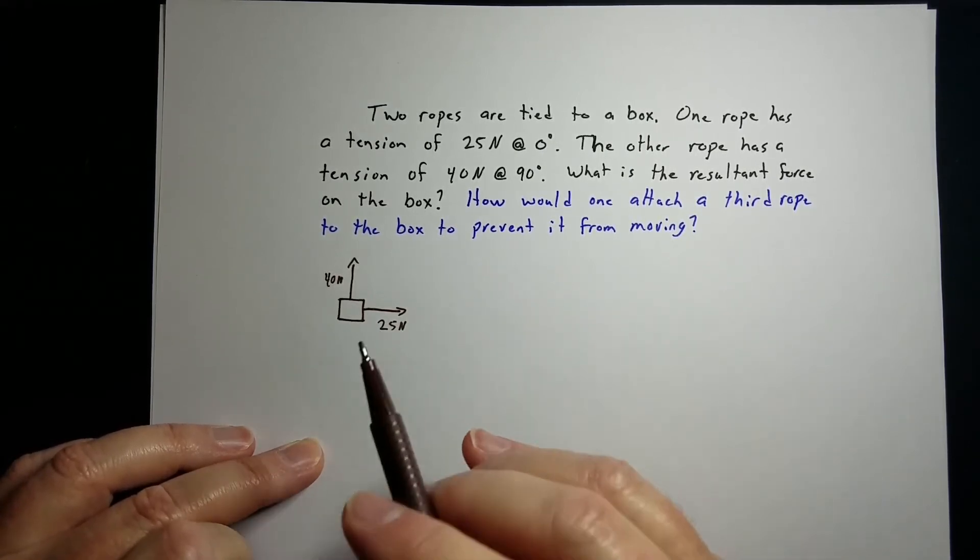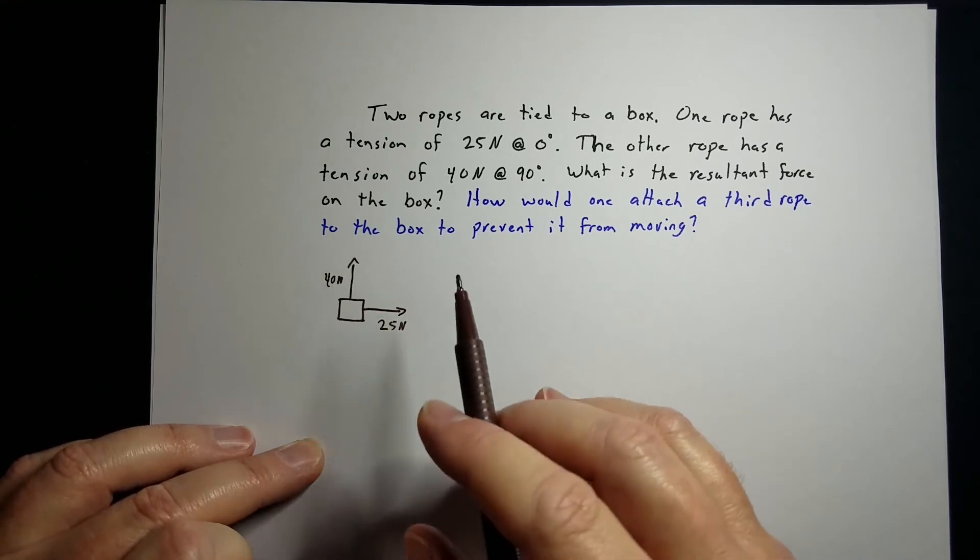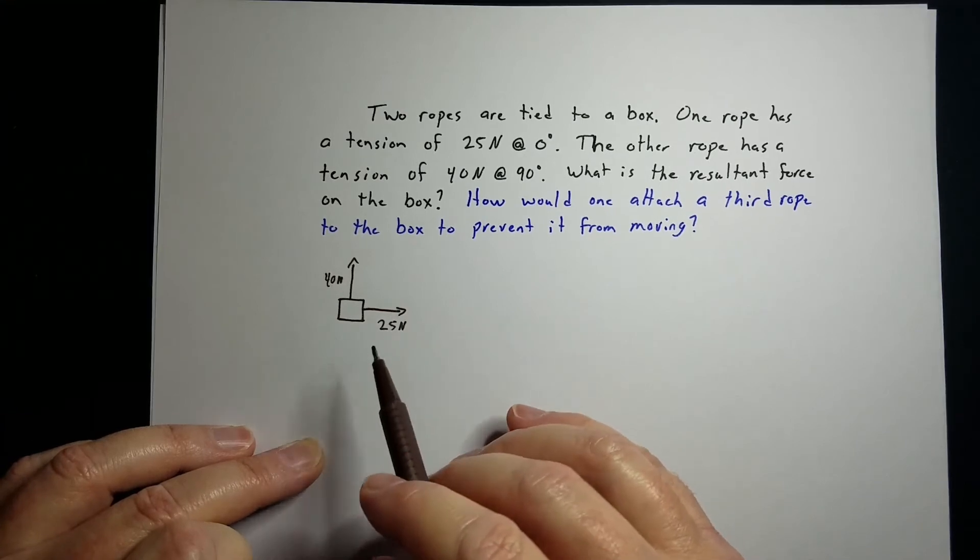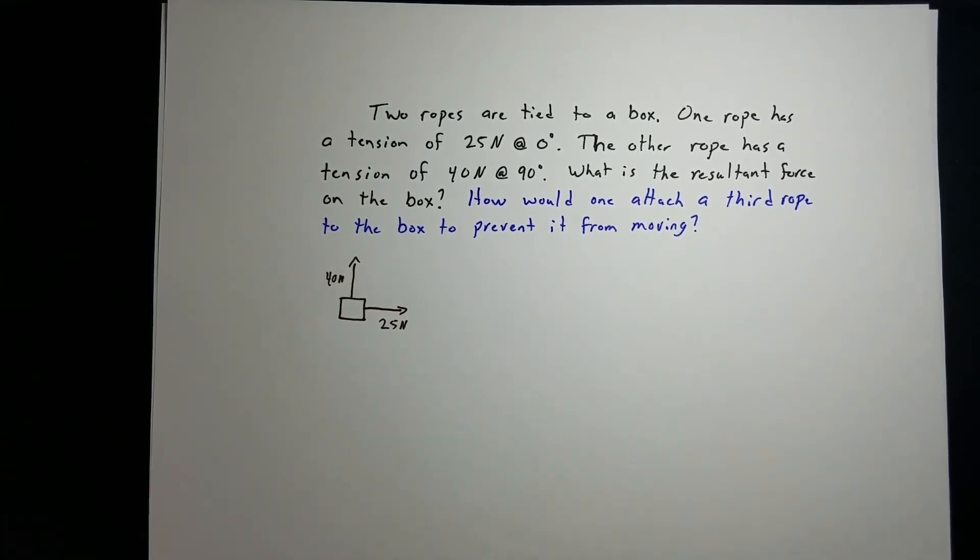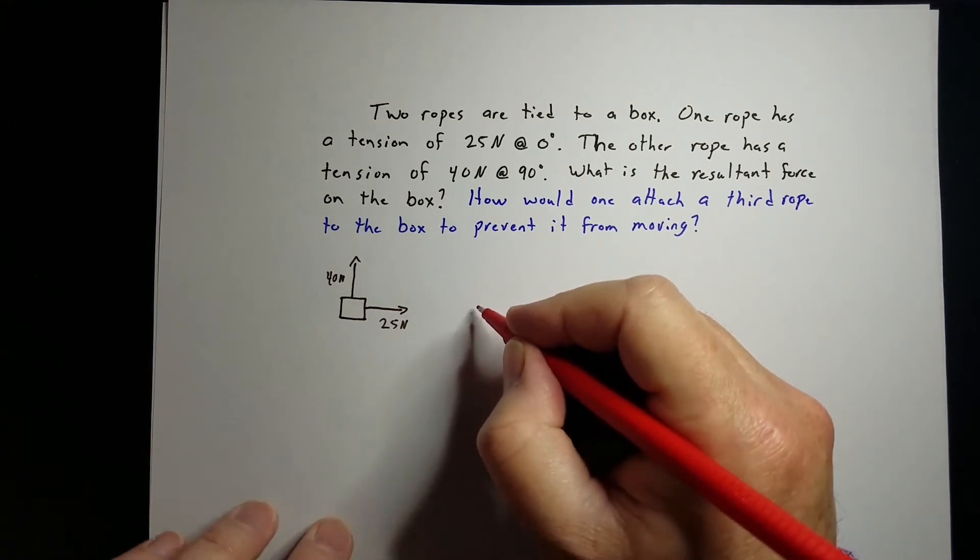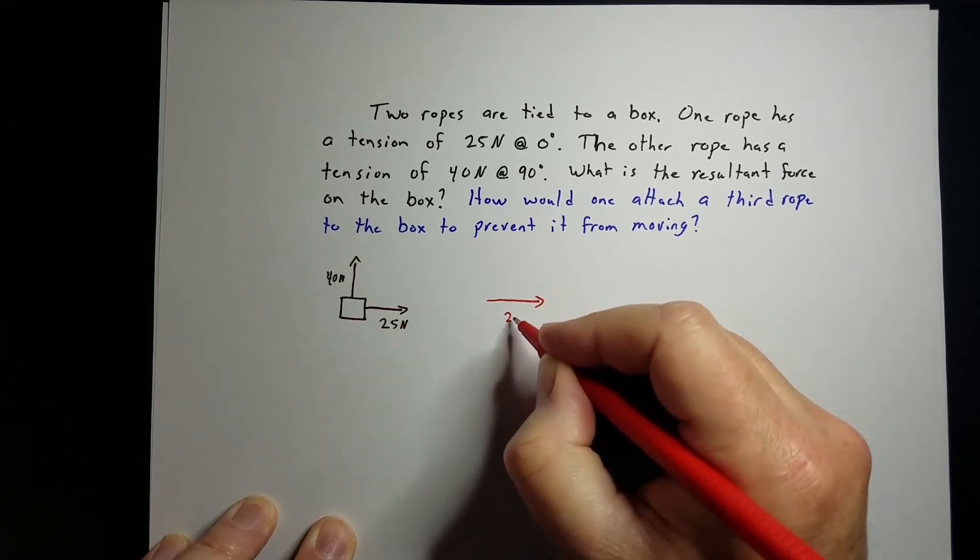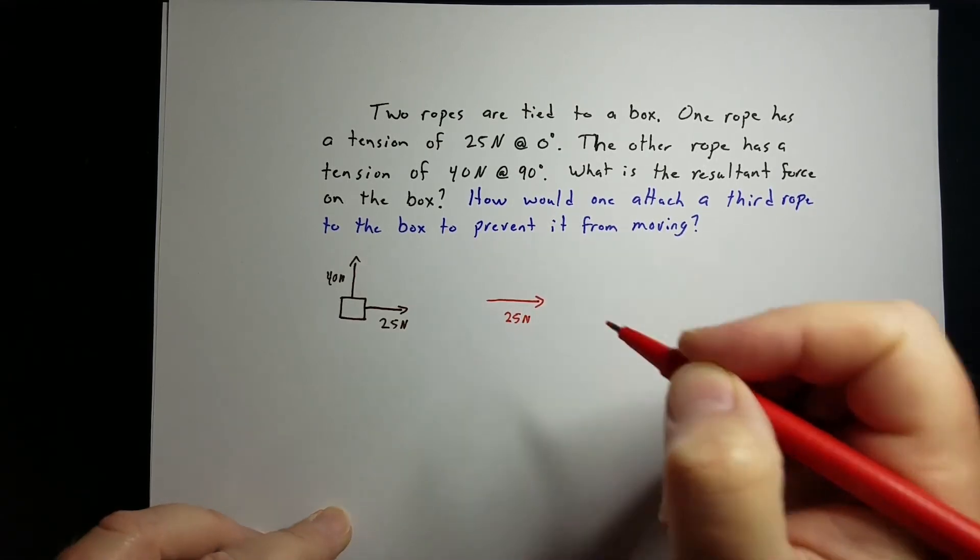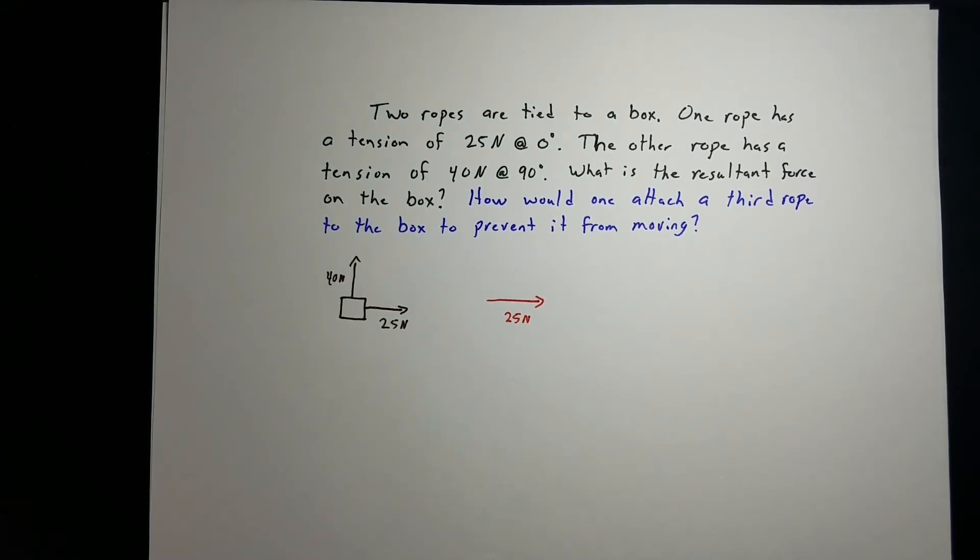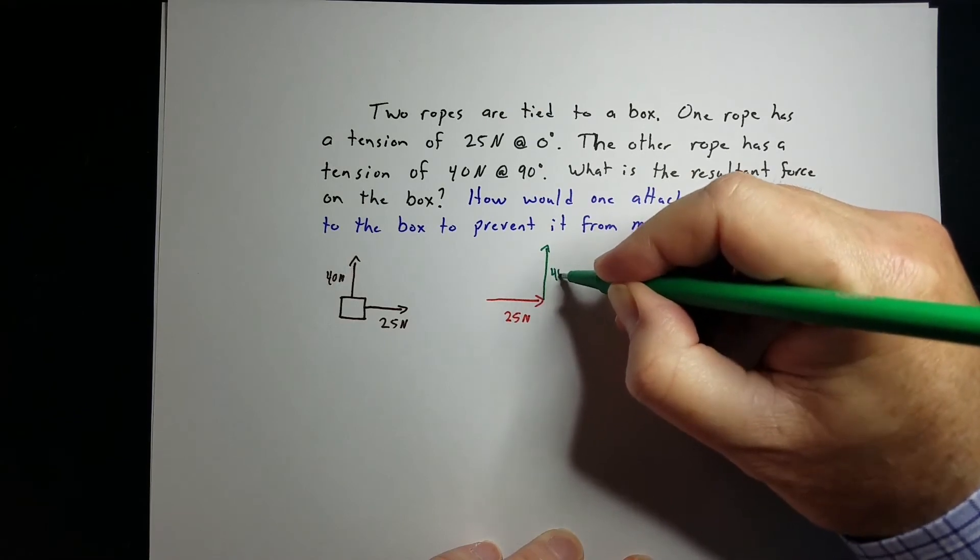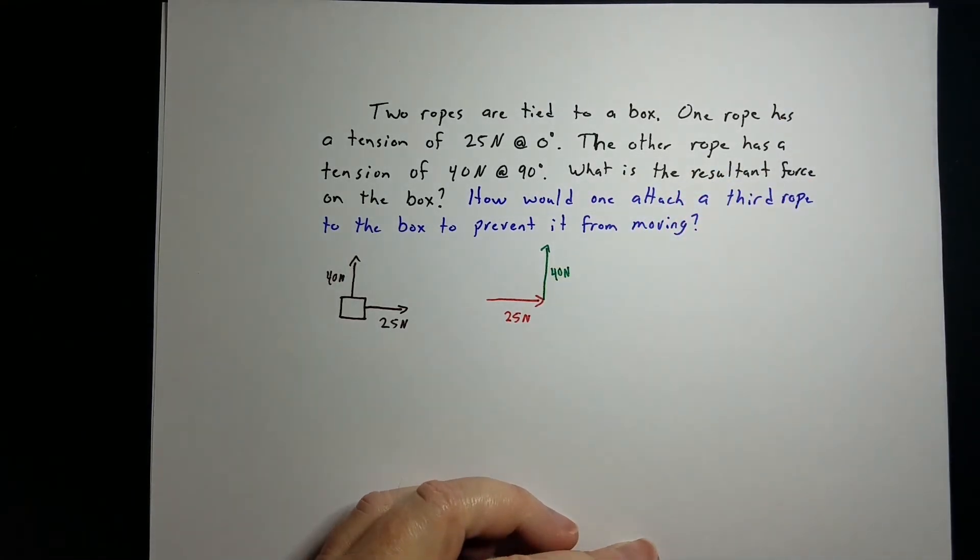Let's draw a vector diagram. A vector diagram is not a free body diagram. A free body diagram labels all the forces acting on the object. A vector diagram just labels the vectors that you are concerned about. For this case, I always like to do the horizontal one first. Where that vector ends, the next vector begins. Obviously, I'm not drawing these to scale.